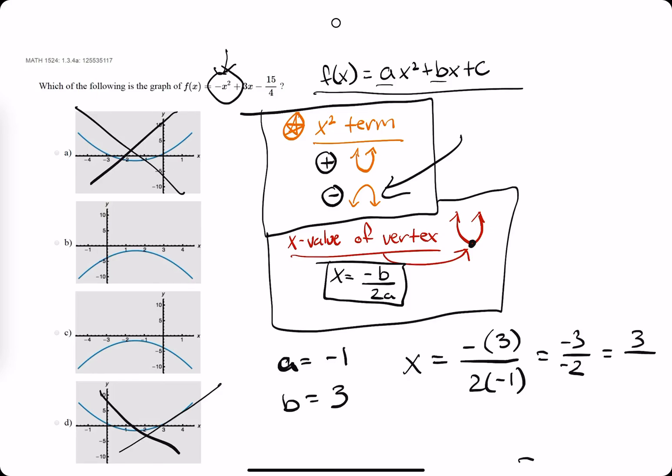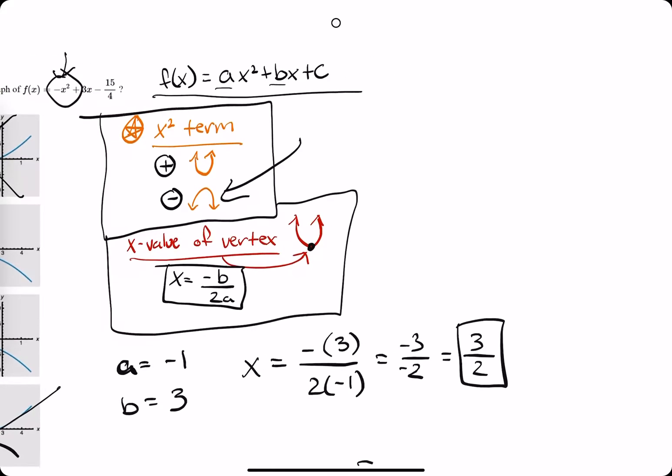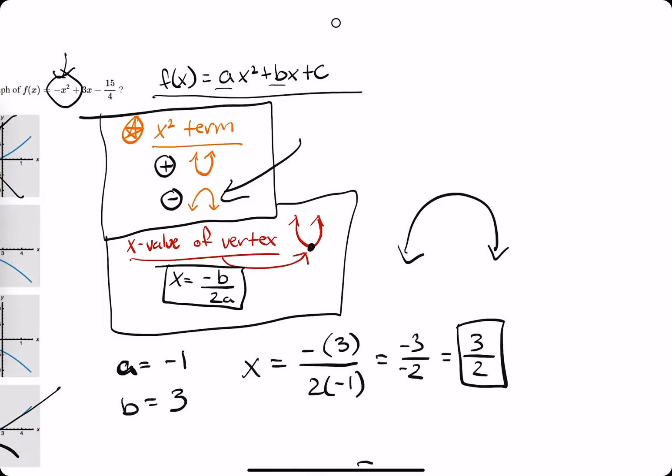which is positive 3 over 2. So what that means is on our graph with our upside down parabola, the vertex should lie at the x value of 3 halves. It should be split right at 3 halves.